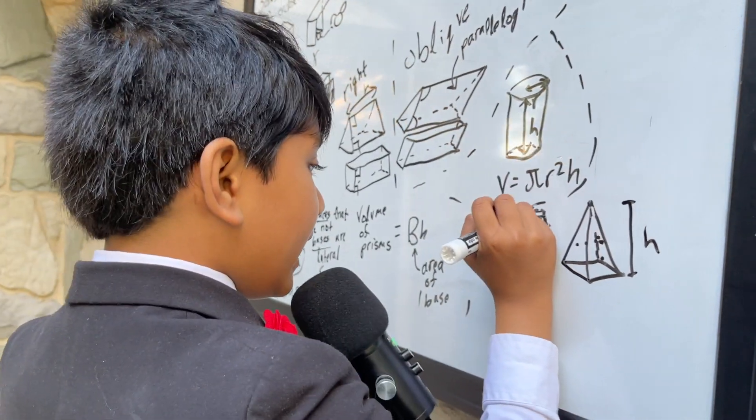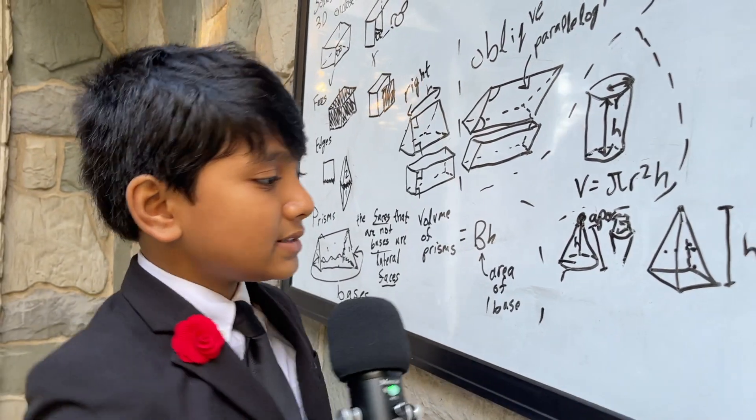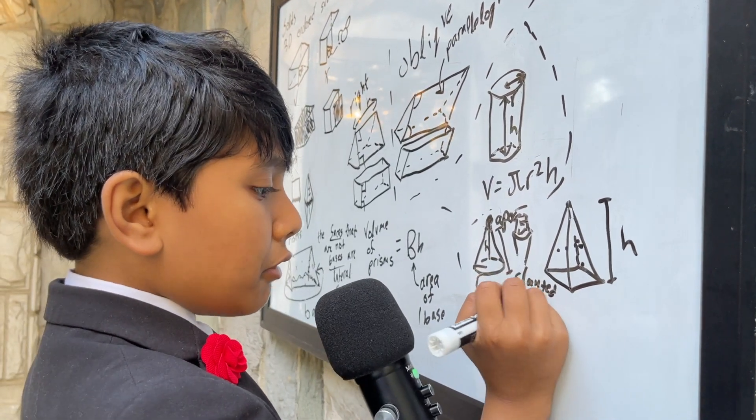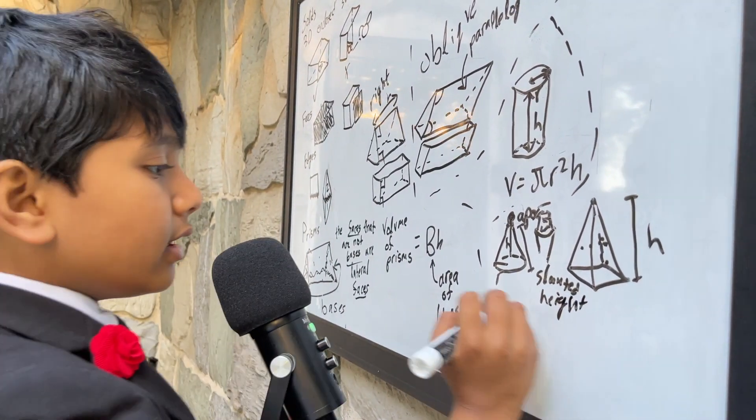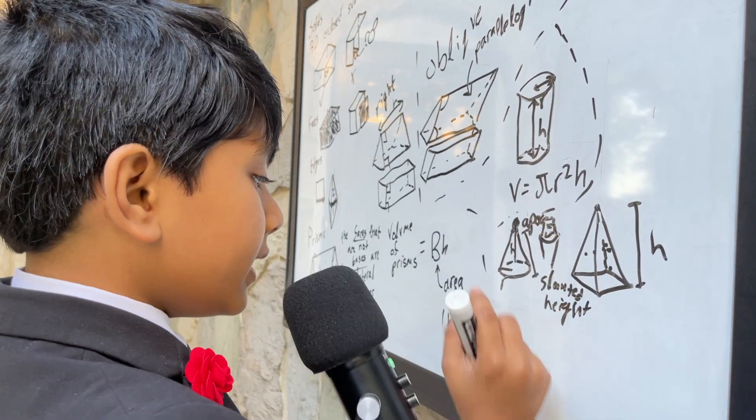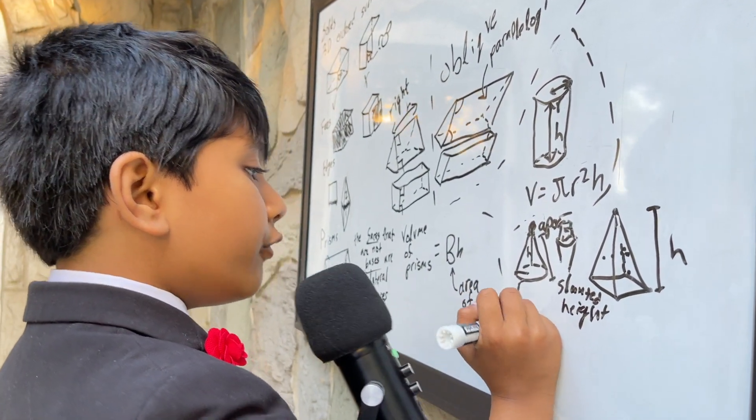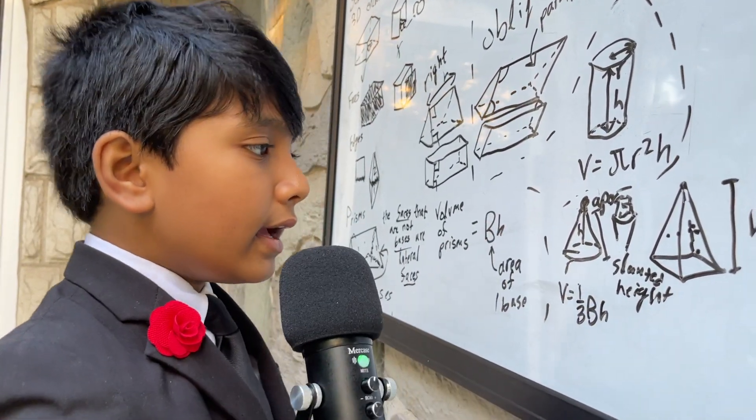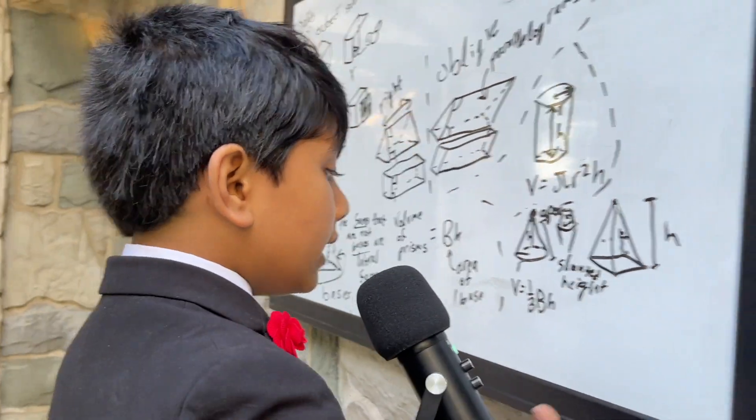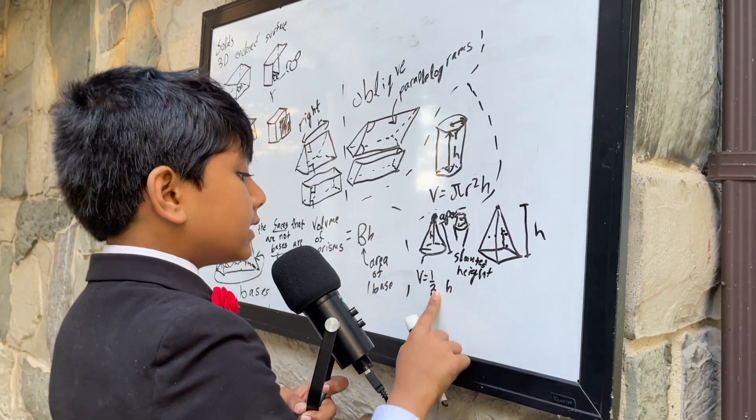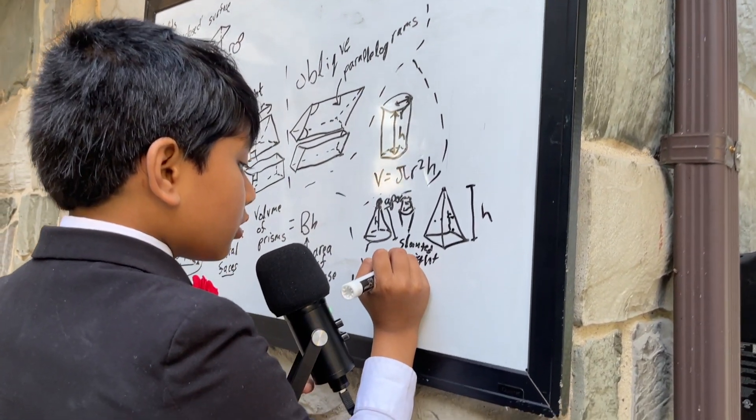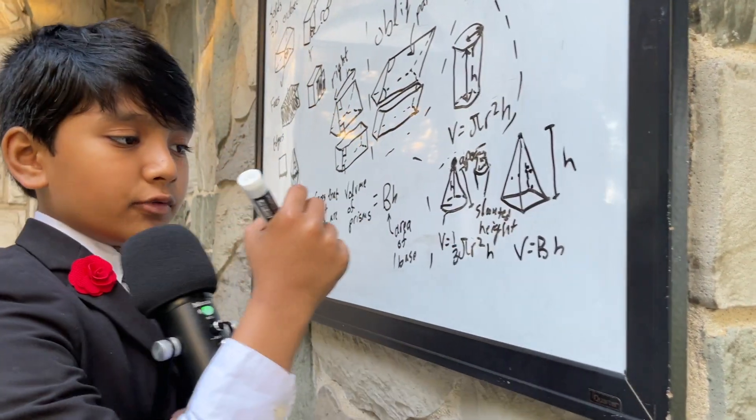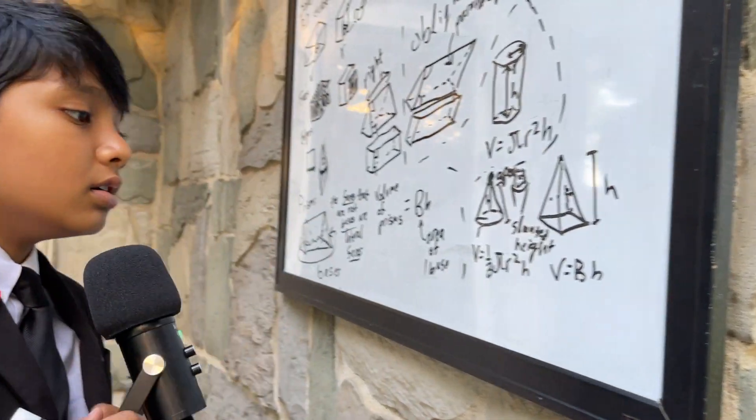However, the thing is, the cone also has a slanted height, which is height measured along the lateral surface. So, now, let's find the volume. So, the volume for both of them is one-third BH. And, because a cone can also be an oval, the base of a cone can also be an oval, but mostly it's a circle. Then, I'm going to say one-third pi R-squared H for this one. V is just BH for this one, because the base can be anything.